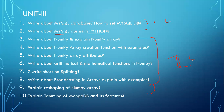One long answer question will surely come from this chapter. To get a good score, prepare at least one chapter from each unit. Every unit has two or three chapters — prepare at least one fully, covering every single topic. In the third unit there are two chapters; the second chapter's syllabus is smaller, so if you prepare both MySQL questions you can easily score good marks.